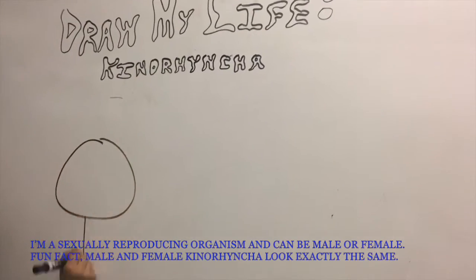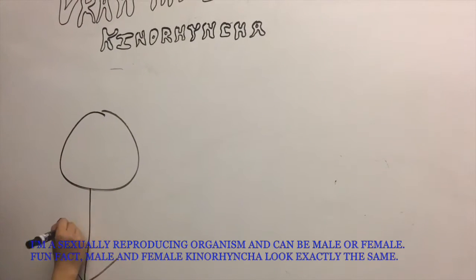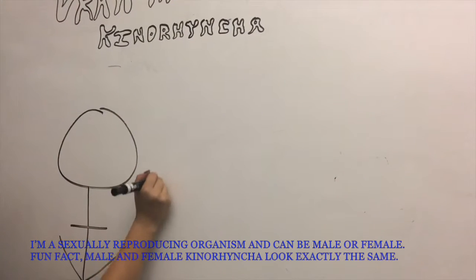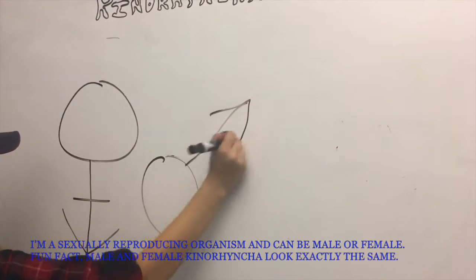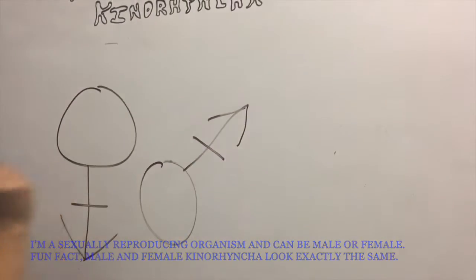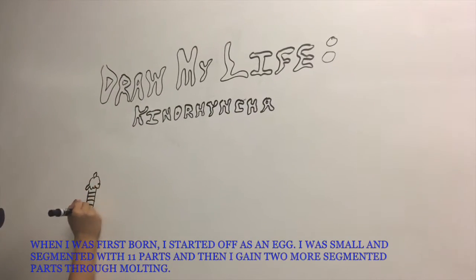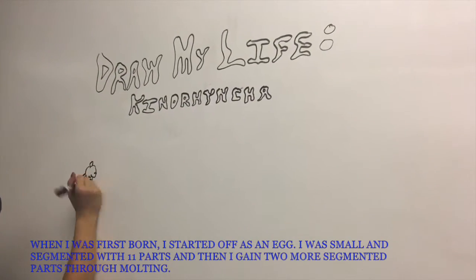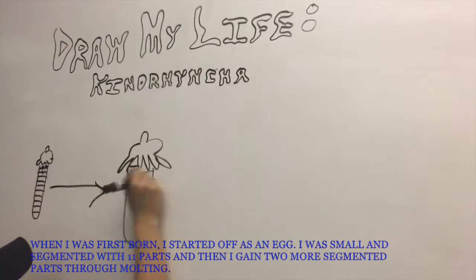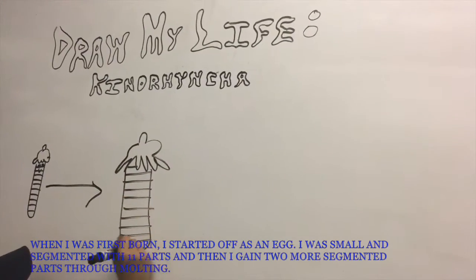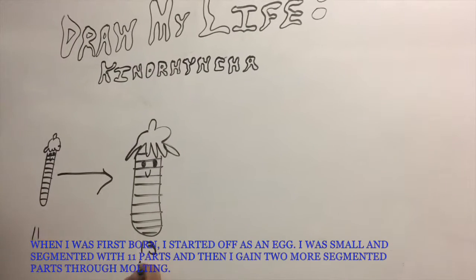I am a sexually reproducing organism and can be male or female. A fun fact: male and female Kynorinkas look exactly the same. When I was first born, I started off as an egg. I was small and segmented with 11 parts, and then I gained two more segmented parts through molting.